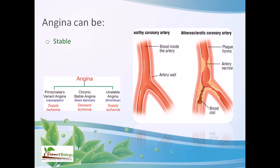Stable angina is provoked by physical exertion, cold weather, eating after meals, excitement, or emotional impact — pain fades quickly with rest. In some patients, pain occurs at a particular level of exertion. Unstable angina is caused by unstable plaques or occurs at rest unpredictably — pain can increase for no obvious reason and can form anywhere in the coronary arteries, causing significant pain and trouble.